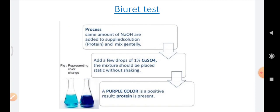Then add a few drops of 1% copper sulfate and the mixture should be placed static without shaking. And then a purple color is a positive result. If a purple color is obtained, then the protein is present in the given test sample.